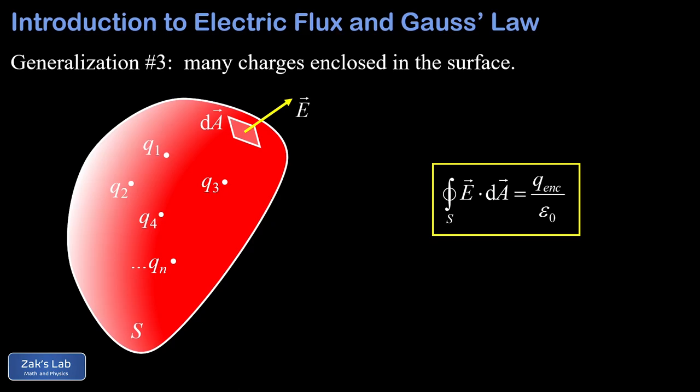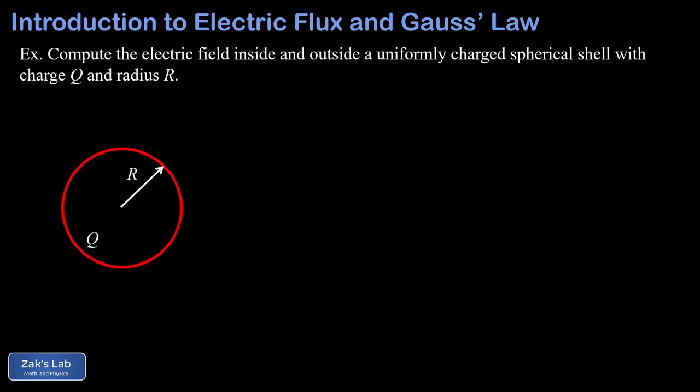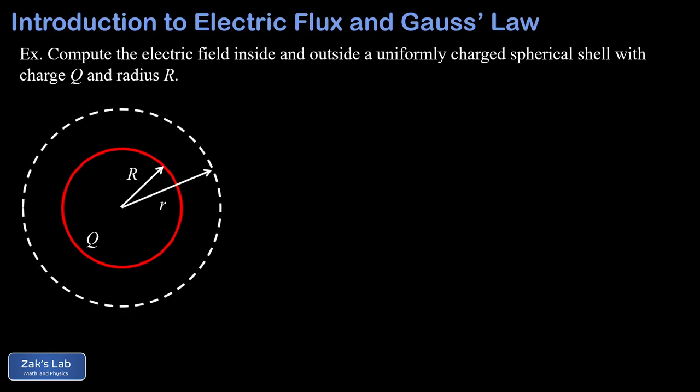But how do we use Gauss's law to compute electric fields? The key point is that we have to exploit the symmetry of our problem so that the integral of the dot product never actually has to be explicitly computed. In our example, we're asked to find the electric field inside and outside a uniformly charged spherical shell of radius R with total charge q. The key to using Gauss's law is to exploit the symmetry of the problem by analyzing the flux through a surface for which the electric field is constant and perpendicular to the area elements — this is called a Gaussian surface. This problem has spherical symmetry, so we choose spherical surfaces that share the same center as the shell.